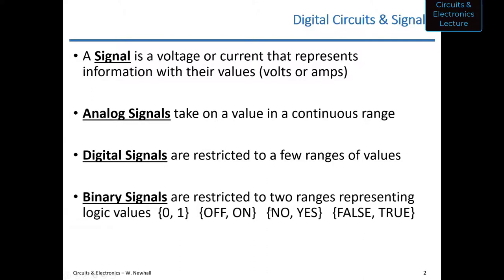Digital signals, however, are restricted to a few ranges of values. Binary signals are restricted to two ranges and represent values of zero or one, off or on, no or yes, false or true — you can assign whatever meaning you want to those two ranges. Binary signals are much more common than multi-level digital signals and are used extensively in microprocessors, microcontrollers, and computer processing.